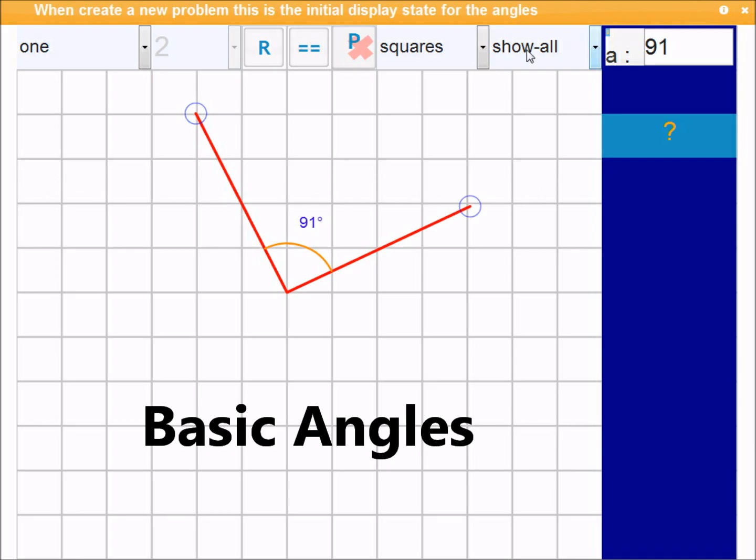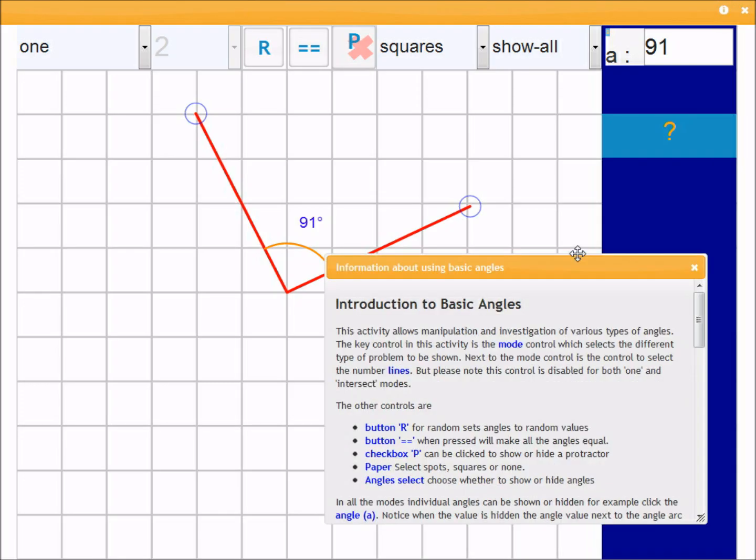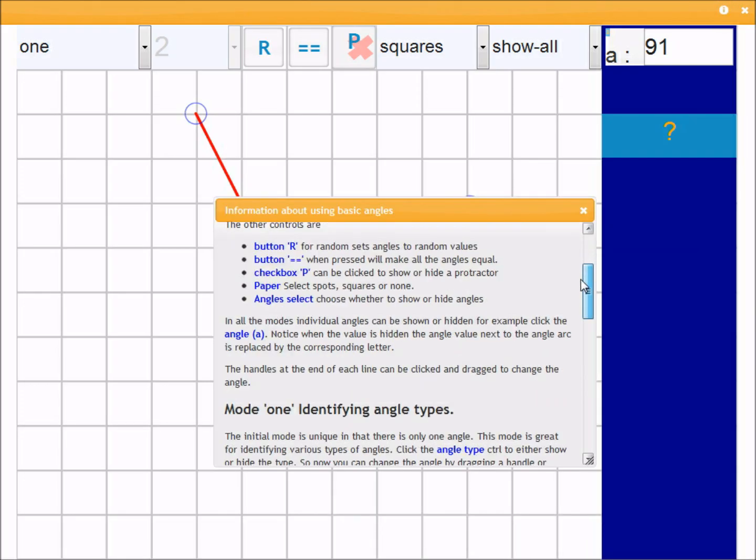As in all the activities, when you move your cursor over a control, you'll see in the top bar a description of what the control does. In the top bar, you'll also see various icons. This eye icon stands for information. If I click it, you'll get a dialog which can be moved around, and it tells you about the actual activity.